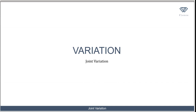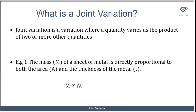Now we'll be talking about joint variation. Joint variation is a variation where a quantity varies as the product of two or more quantities. So far we've talked about direct and inverse variation. In direct variation, a quantity like goods sold is proportional to money made. In inverse variation, speed is inversely proportional to time. In joint variation, one quantity is proportional to more than one variable.